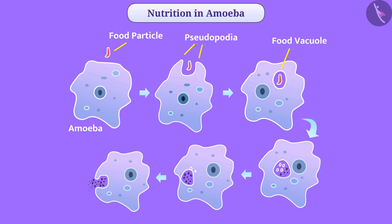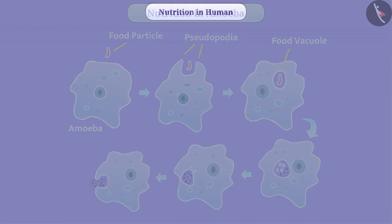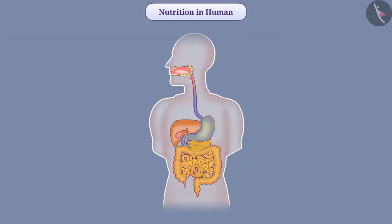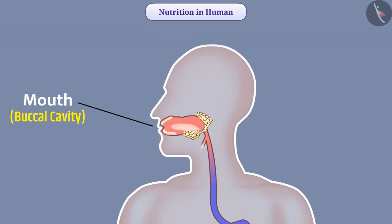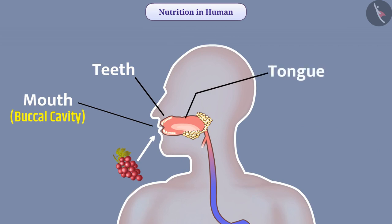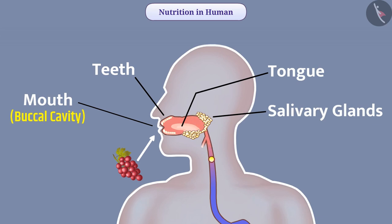Let us now see how the process of nutrition takes place in humans. In humans, there is an extended long tube from mouth to the anus called the alimentary canal. The first part of the alimentary canal is the mouth. In the mouth, food is chewed by teeth and converted into small particles. During chewing, the muscular tongue mixes food with saliva secreted from the salivary glands. Saliva wets the food, making it easier to move down.